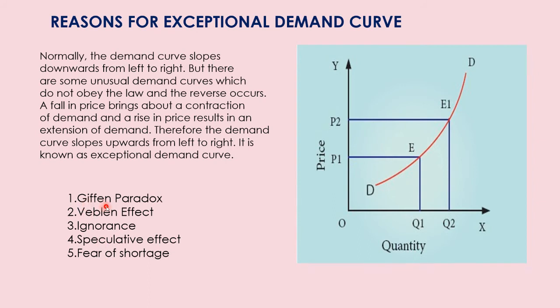Giffen's paradox was found by Sir Robert Giffen, so it is named after him. Paradox means the opposite. These goods are called Giffen goods or inferior goods — it is an exception to the law of demand. When the price of an inferior good falls, the poor will buy less, and vice versa. This is called Giffen's paradox.